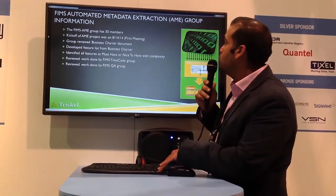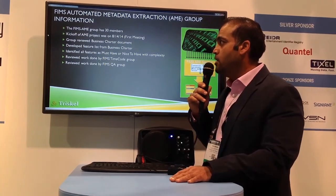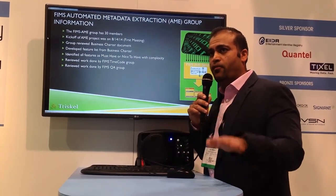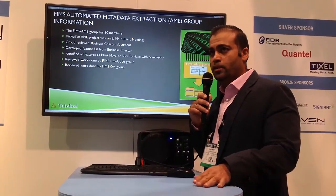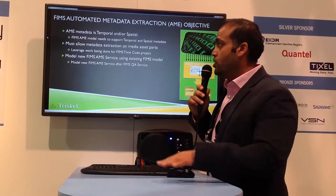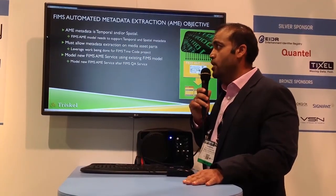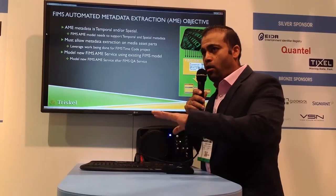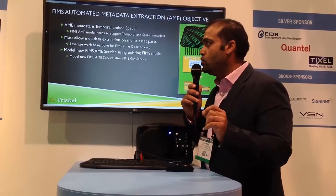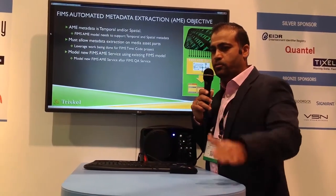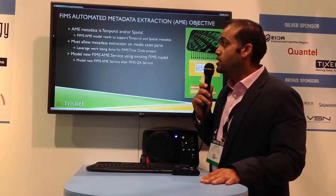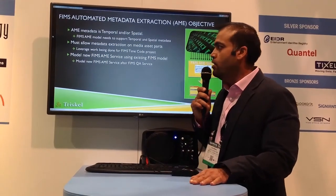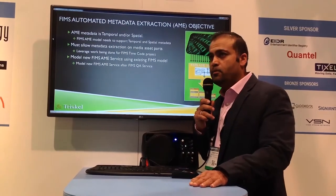The FIMS Automated Metadata Extraction group is composed of 30 members and was kicked off in 2014. We're also leveraging a lot of the work done by the FIMS QA group and the time code group. There were certain guidelines we needed to follow: AME metadata is temporal and/or spatial. You need to be able to track the projectile of a ball when it's being kicked within a game. You also need to be able to track temporal information — from time code 1 to time code 2, something happened. We must also allow metadata extraction on media asset parts, so you might want to inspect only certain parts of the media object.